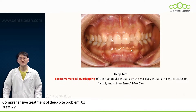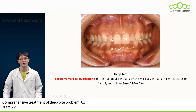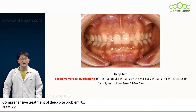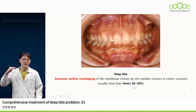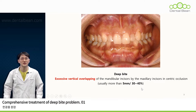In clinical practice, such cases are frequent — maxillary incisors excessively overlapping mandibular incisors. We refer to these instances as a deep bite. To set a guideline, if the mandibular incisors are obscured by approximately five millimeters or more, or if over 30 to 40 percent of the total clinical crown length of the mandibular incisors is covered, we categorize that as a deep bite.